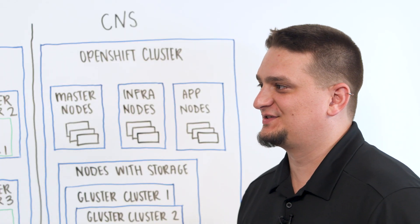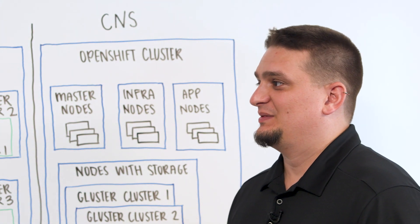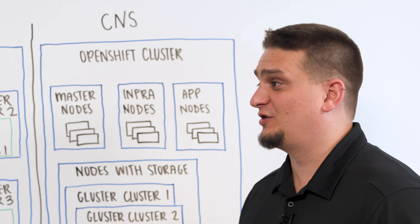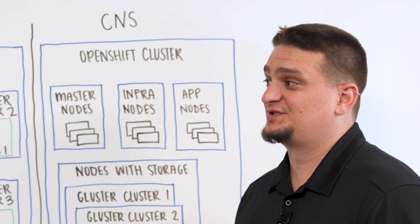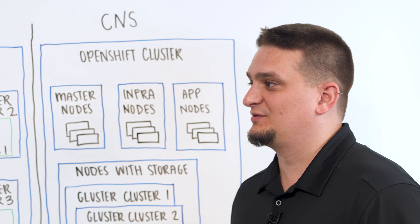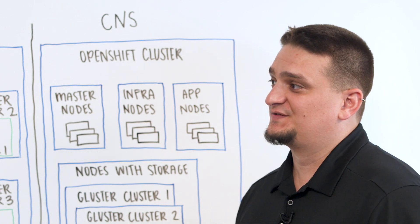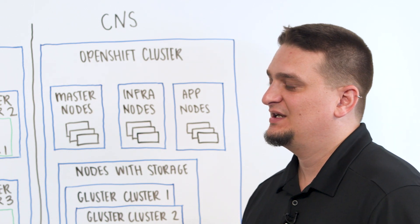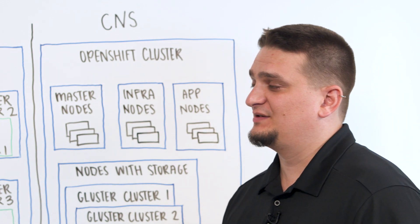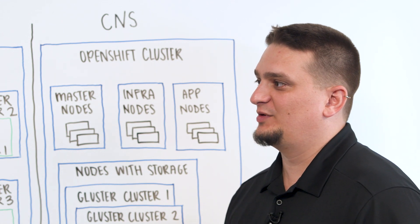So OpenShift leverages the Kubernetes persistent volume framework. Prior to the advent of dynamic storage, platform administrators had to go in behind the scenes and create many different types of persistent volumes ahead of time. Once those persistent volumes are up and running, applications will then submit persistent volume claims to reach out to the persistent volumes and grab that storage. OpenShift is going to review the configurations of those claims and see if one matches up. In the event that OpenShift can't find the appropriate persistent volume, that application is not going to be able to start up until one becomes available.